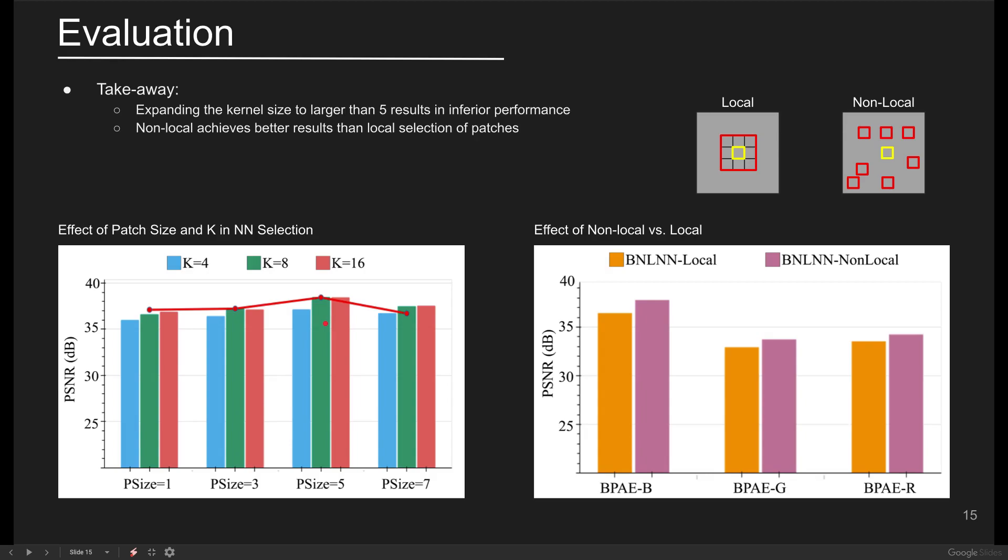However, increasing the number of patches to 16 does not lead to improved performance. This is expected as the retrieved patches become less similar to the observed patch as the k increases. Considering fixed k equal to 8, the red polyline shows the effect of patch size on the performance.